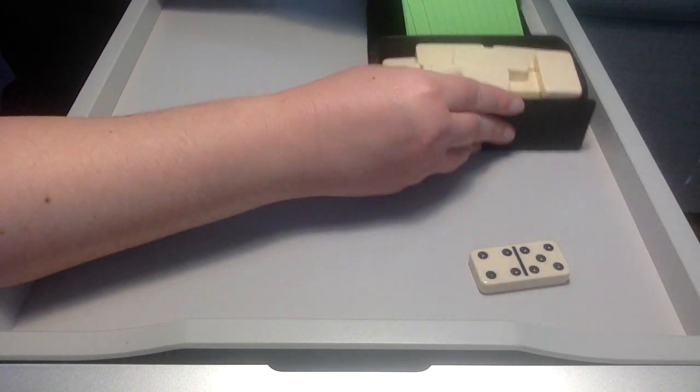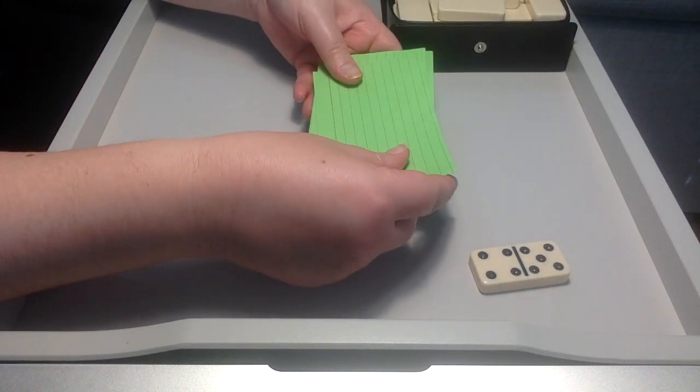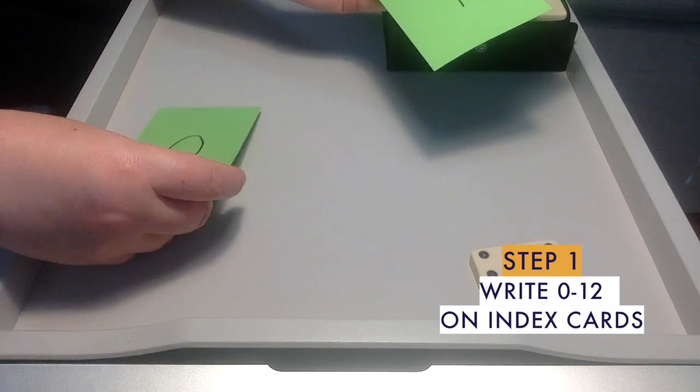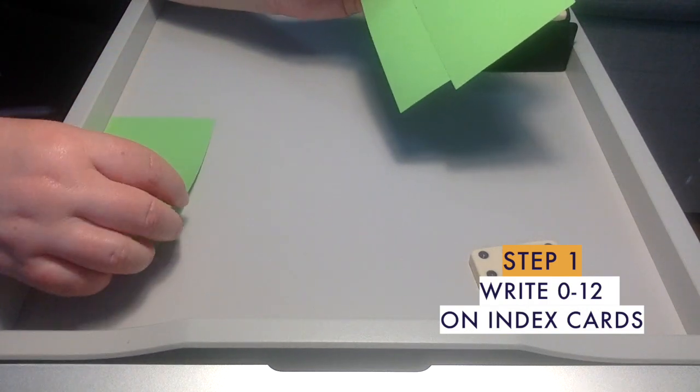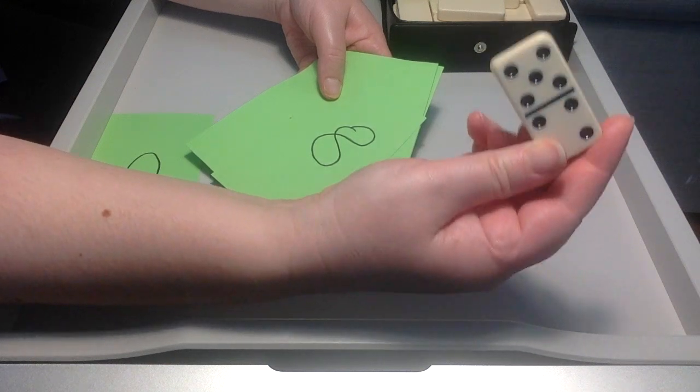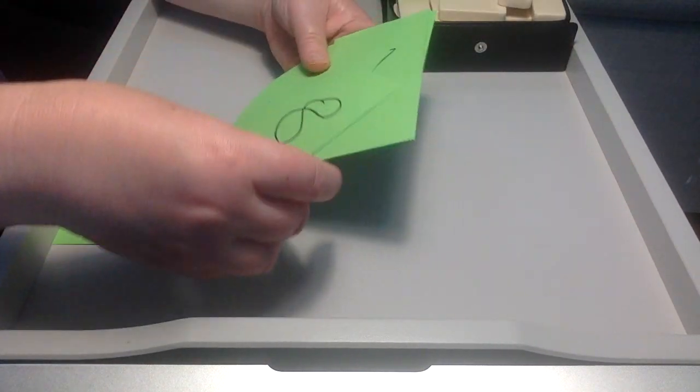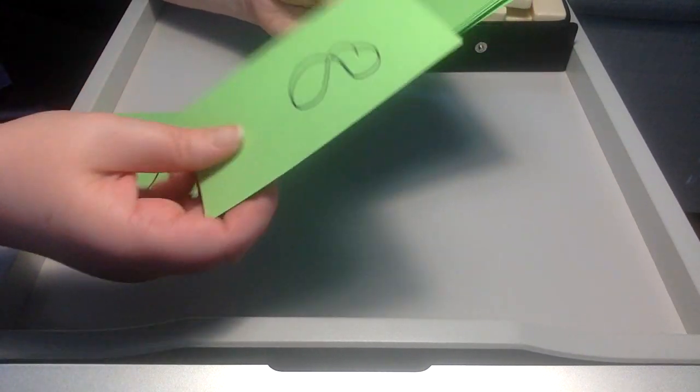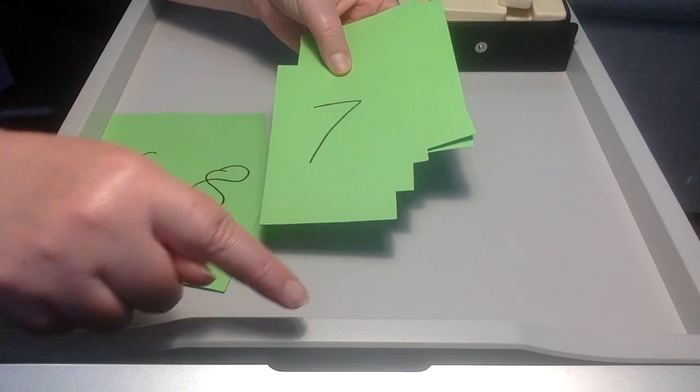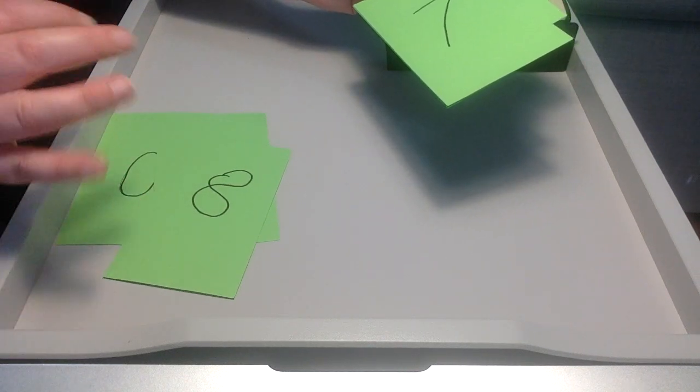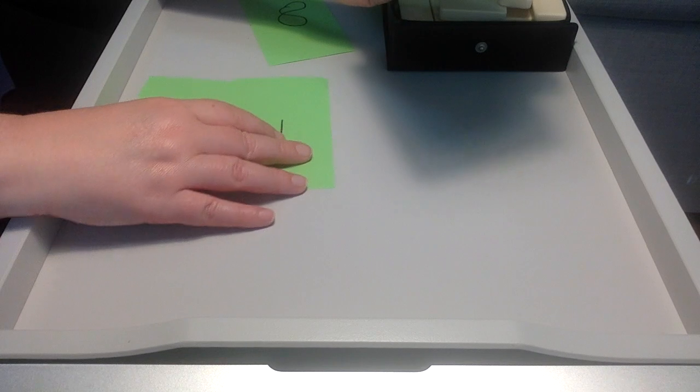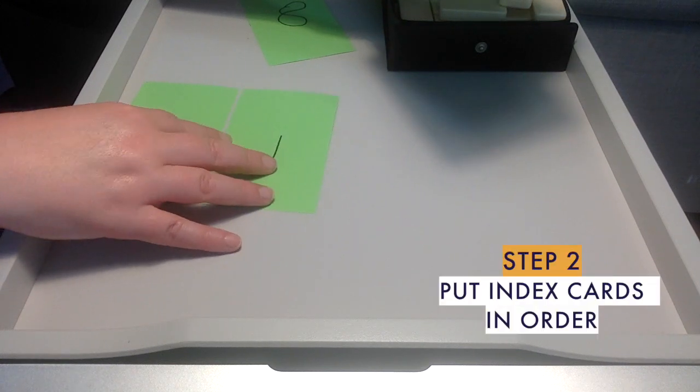And then basically you're gonna have students start by writing out numbers 0 through 12 because 0 through 12 are the numbers that the dominoes will add up to. So you're gonna have them first of all write 0 through 12 on the index cards. Again, I have them go this way mostly because it saves space, but also it's more like a parking space, which is what this game is supposed to be about.